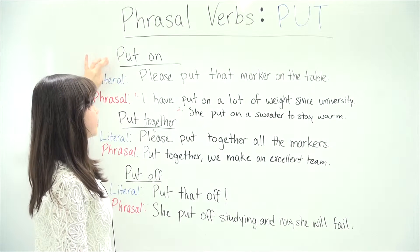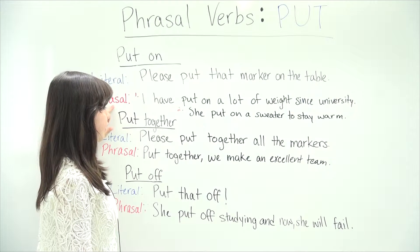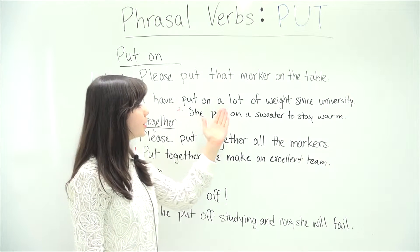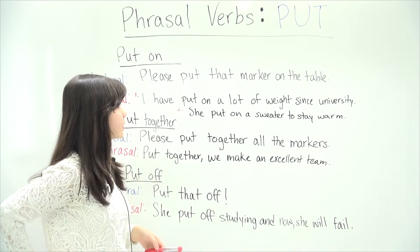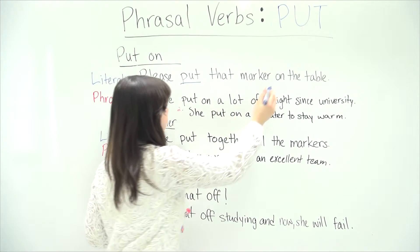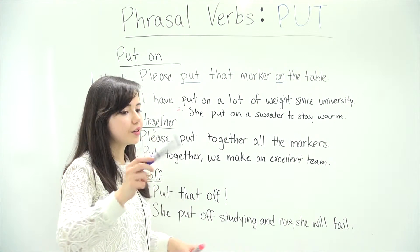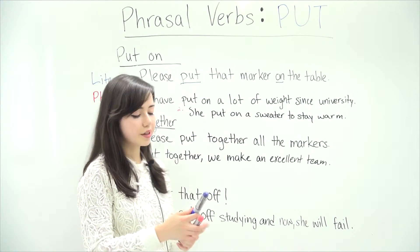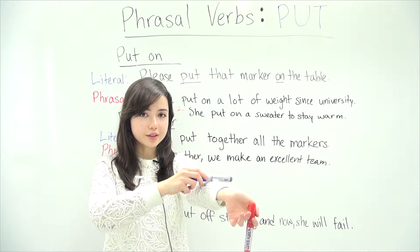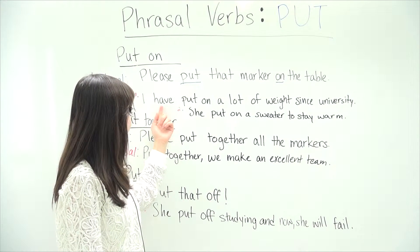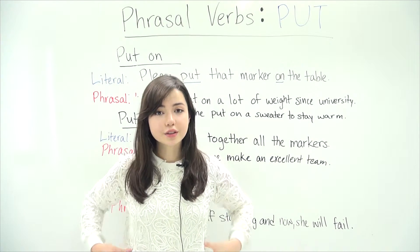We're working with the phrase 'put on'. Our first phrasal sentence is: 'I have put on a lot of weight since university.' Just like the first sentence of put on — there's 'put' and then 'on'. You take that object and you put it on the subject. So with the marker, if I'm putting it on my arm, I'm putting the marker right here. When I say 'I have put on a lot of weight since university,' am I taking some weight and literally putting it on top of me?